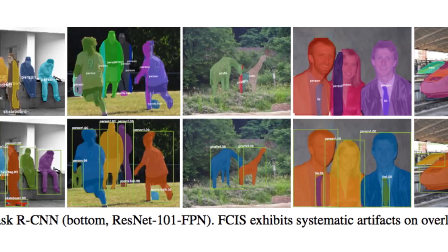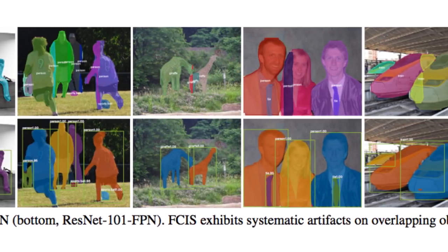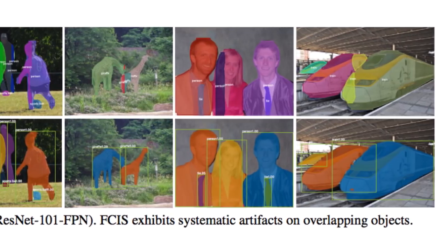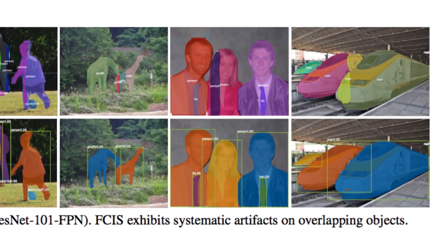But FCIS exhibits systematic errors on overlapping instances and creates spurious edges, showing that it is challenged by the fundamental difficulties of segmenting instances.